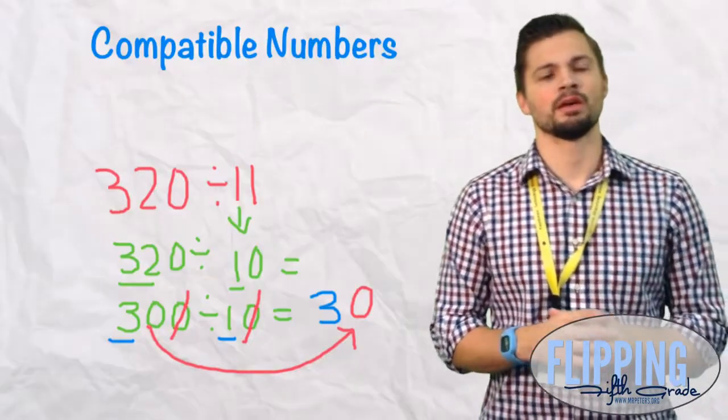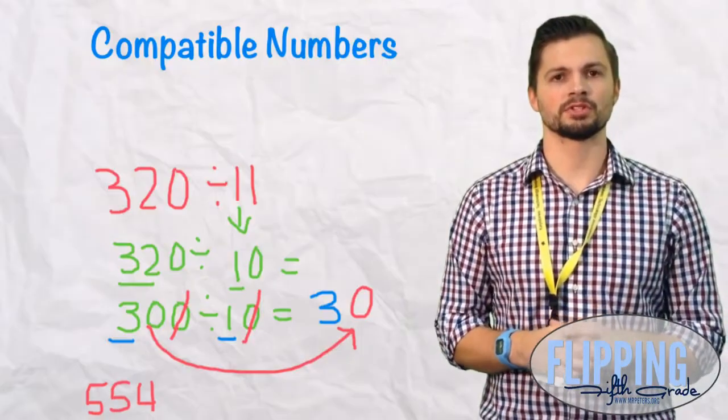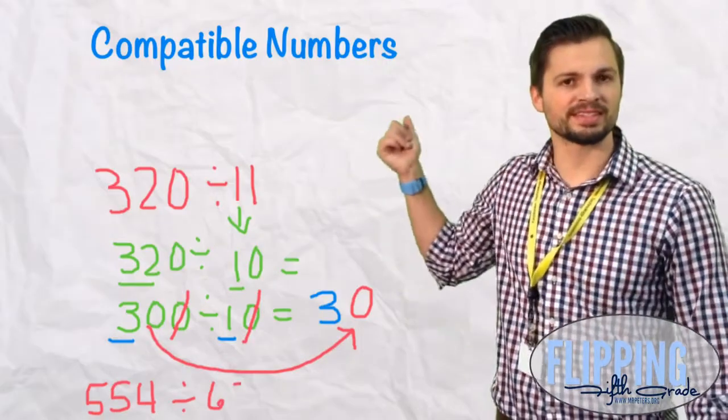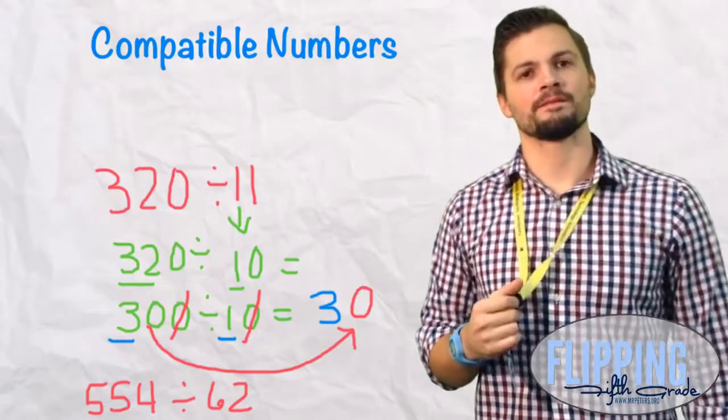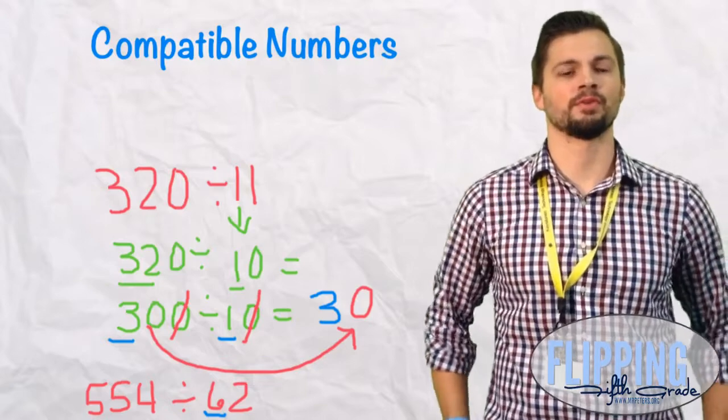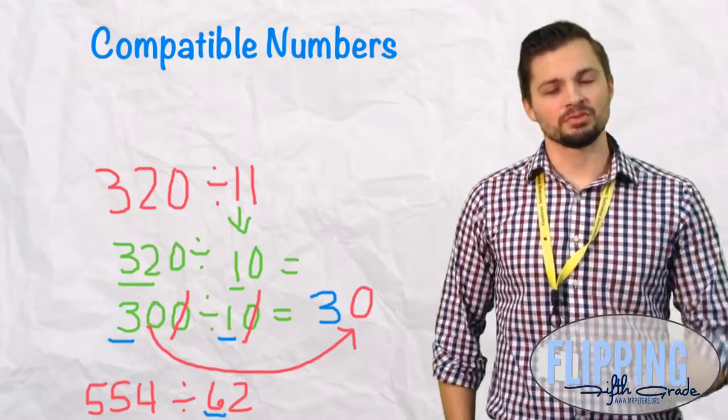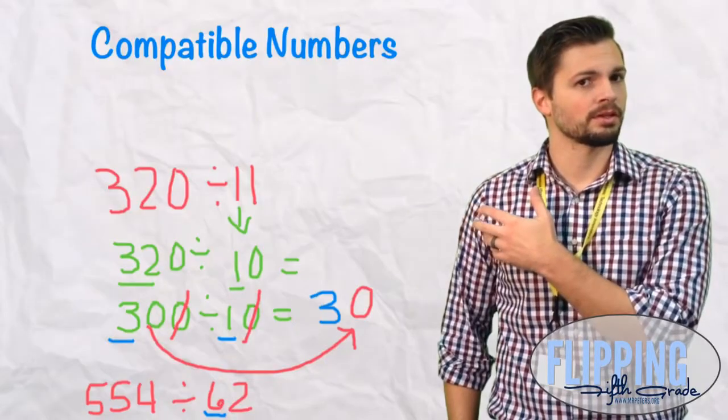Let's look at another one. 554 divided by 62. First thing, let's underline the 6 in 62. And let's underline that 55 in 554. So when we do that, we now look for a number that's close to 55 that 6 goes into.